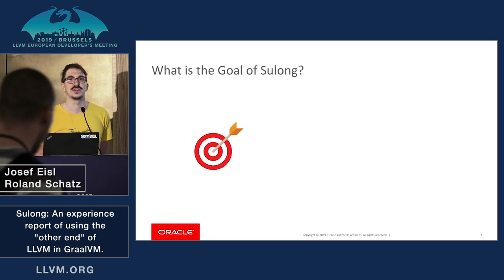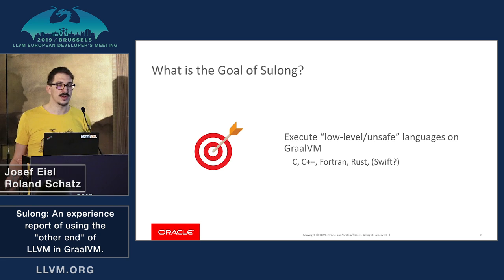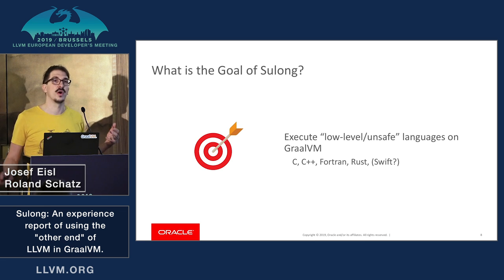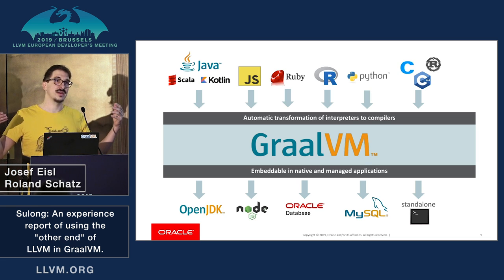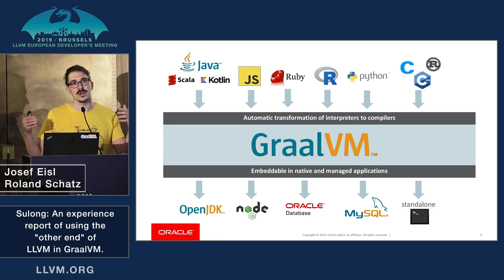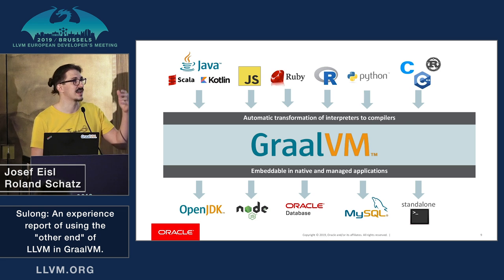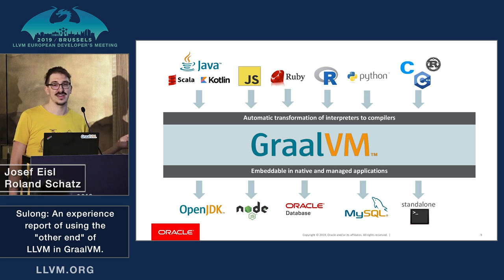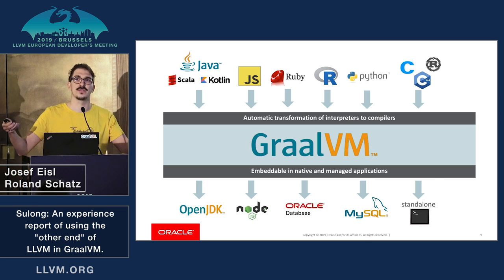So what are we trying to achieve while building yet another LLVM bitcode interpreter? Our goal is to execute low-level or unsafe languages like C, C++, or others on GraalVM. GraalVM is a polyglot virtual machine where we try to execute all kinds of different languages on a single runtime — including JVM-based languages like Java, Kotlin, and Scala, but also dynamic languages such as JavaScript or Python. We are adding Sulong to execute LLVM-based languages on this virtual machine.